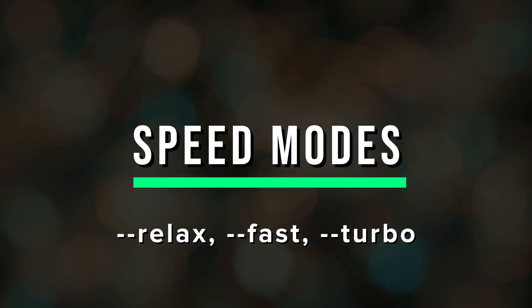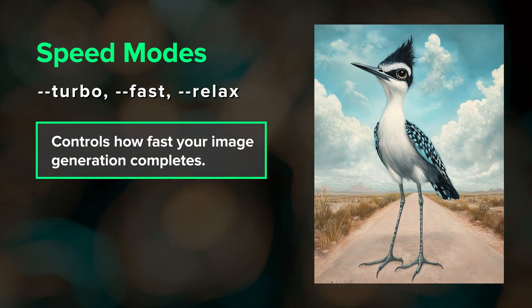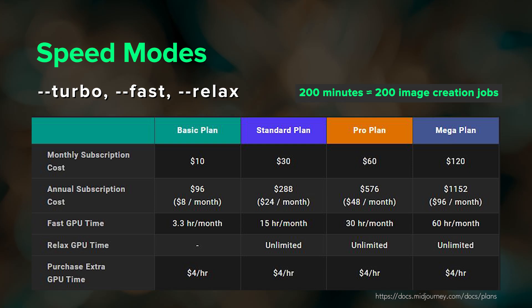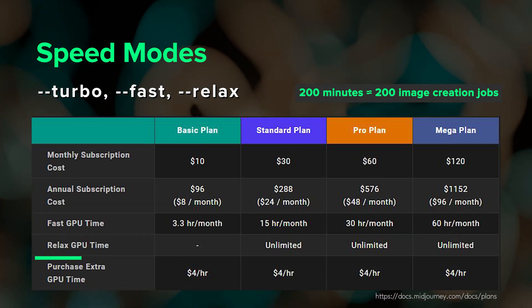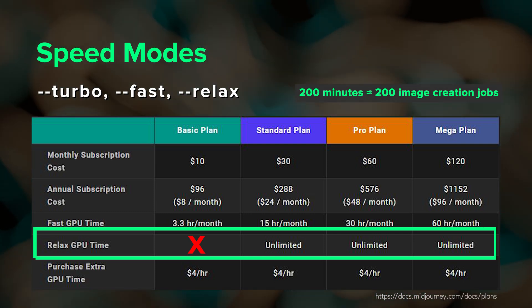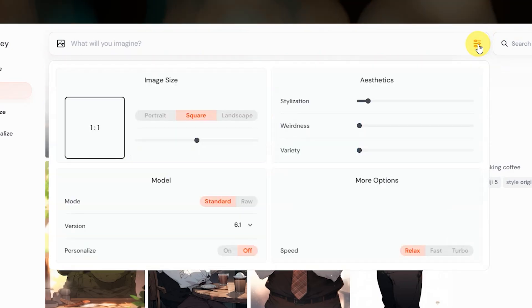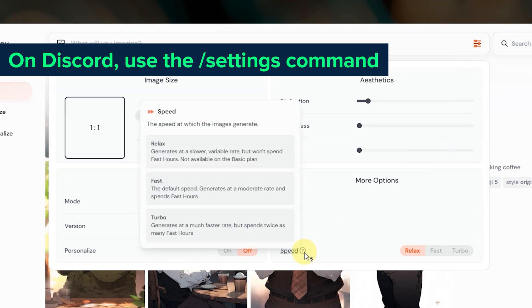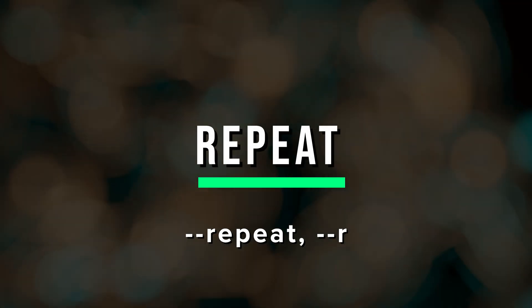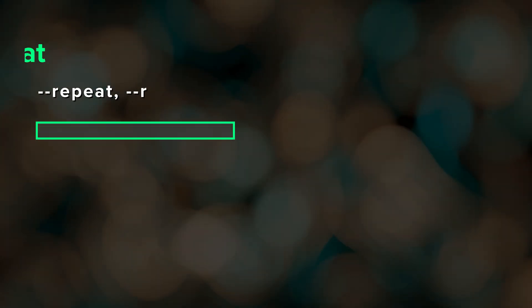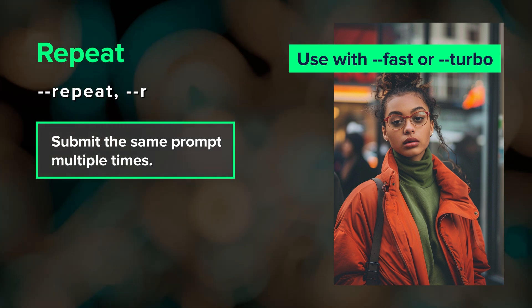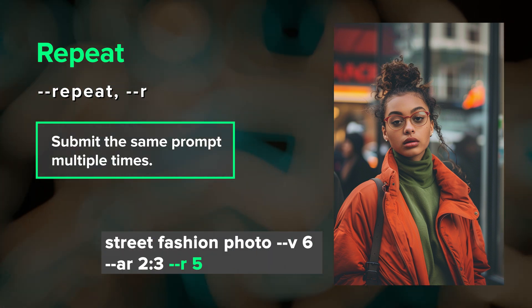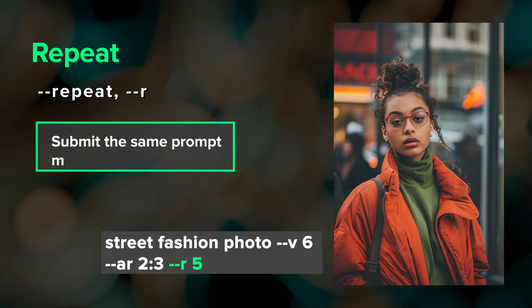We have three parameters that control how fast your images are generated: Turbo, Fast, and Relax. Turbo and Fast use your fast GPU hours that come with your subscription each month, and Relaxed mode does not. Relaxed mode is not available with all subscriptions. You can set your default speed mode in your settings, or override it for a specific job by including it as a parameter. Repeat is used to tell Midjourney to run the same prompt multiple times and can only be used with fast or turbo mode. To run five jobs with the same prompt, just include --repeat or --r 5.